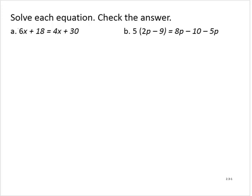Notice how both sides of the equation are simplified — there are no grouping symbols to remove and no common factors. But notice also that there are variable terms on both sides of the equation: we have a 6x and a 4x. So what we want to do is get all the variable terms to one side of the equation.